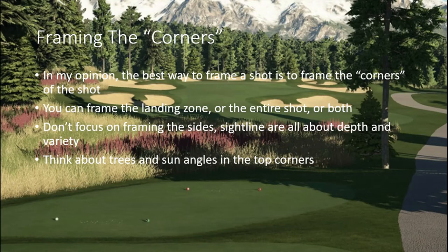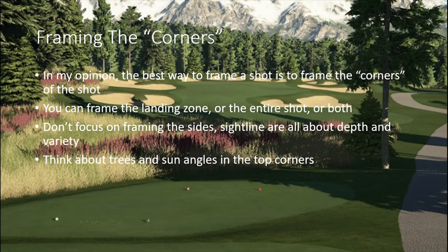Think about trees and sun angles in the top corners. Overhanging trees usually sit in the top corners — they shouldn't affect the shot, just peek in from the top corner. For sun angles, you don't want the sun right behind the hole — you want it off to one of the top corners for the best look. You can't always accomplish that since some holes will have the sun at your back, but for a stunner par three, make sure the sun is off to the top right or top left.